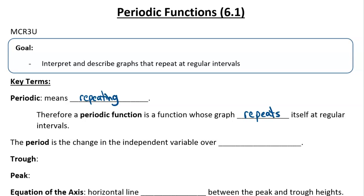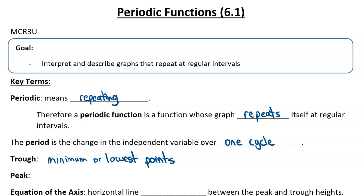The period is the change in the independent variable over one cycle. A trough is the minimum or lowest point — if it's repeating, the graph goes down to that minimum point over and over again. The peak is the maximum or highest point, reaching that maximum repeatedly — however long you've graphed the function, that maximum occurs several times.